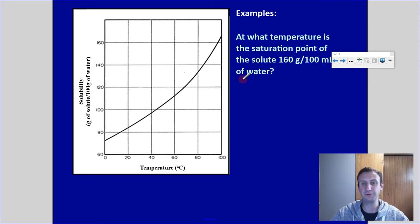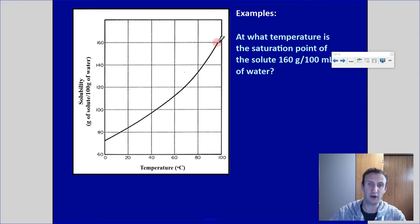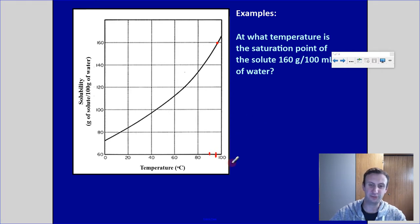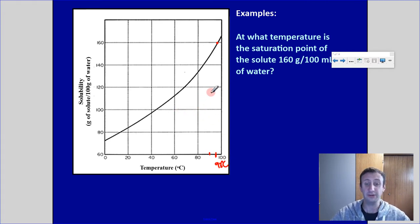What temperature is the saturation point of the solute at 160 grams per 100 mils of water? So 160 grams is right here, and for temperature I'm right about there — 90 would be at this point. So I would read that as right around 93 degrees Celsius. We can actually get values for any temperature or any mass in this range.